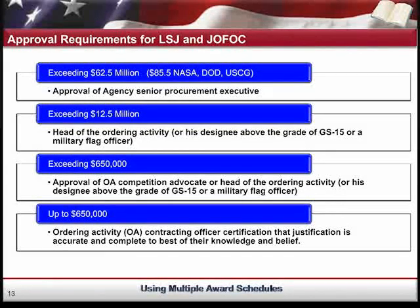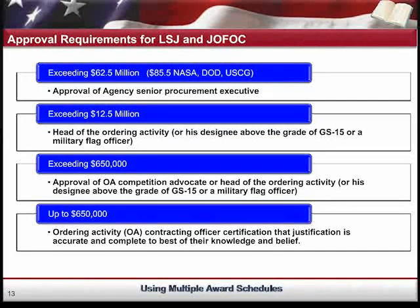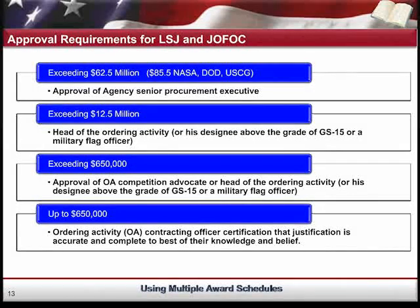Let's talk about approval levels — who holds those levels and where the dollars break when talking about a limited source justification under the schedules program or a justification for other than full and open competition, or J&A, under FAR 15. Starting from the bottom: up to $650,000, the ordering activity contracting officer has the certification authority, writing the certification that the justification is accurate and complete to the best of their knowledge and belief. If you're exceeding $650,000 but under $12.5 million, the approval of the ordering activity competition advocate or head of the ordering activity — or his designee above the grade of GS-15, or a military flag officer — is appropriate.